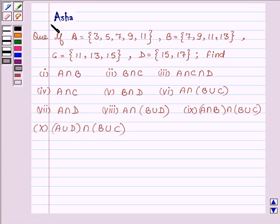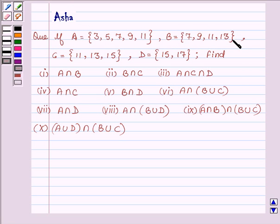Hi and welcome to the session. I am Asha and I am going to help you with the following question: If A is a set containing elements 3, 5, 7, 9 and 11; B has elements 7, 9, 11 and 13; C has elements 11, 13 and 15; and D has elements 15 and 17. Then we have to find the solution of the following 10 parts.